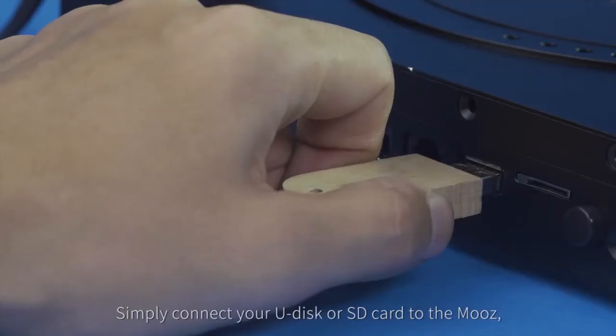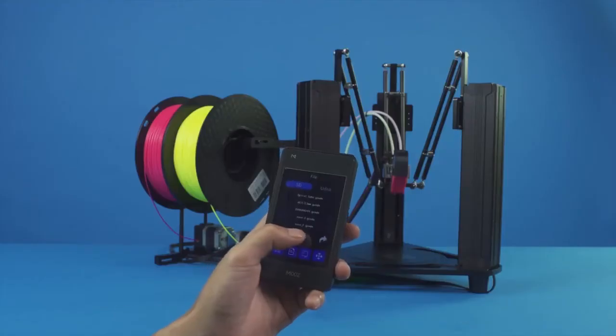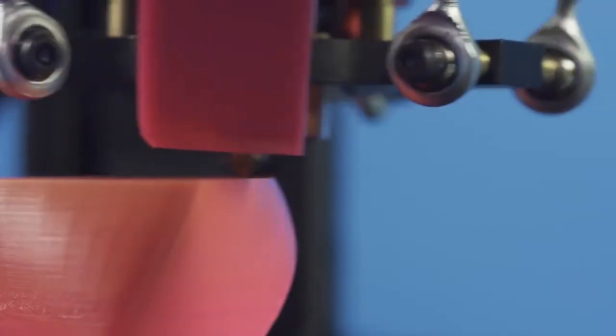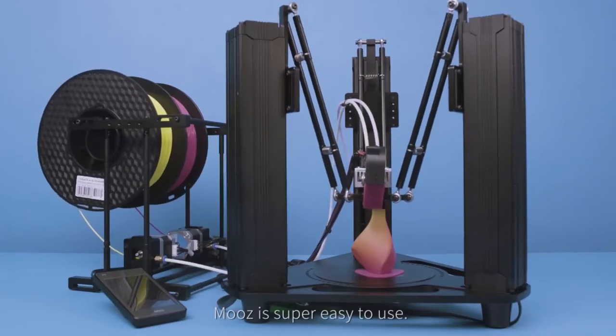Simply connect your U-Disc or SD card to the Moose. Tap the control panel and printing begins. Moose is super easy to use.